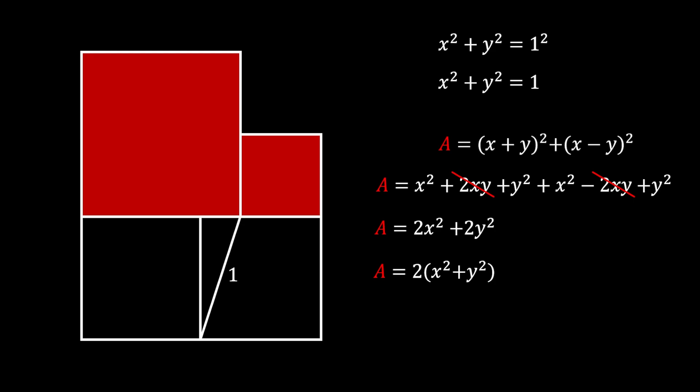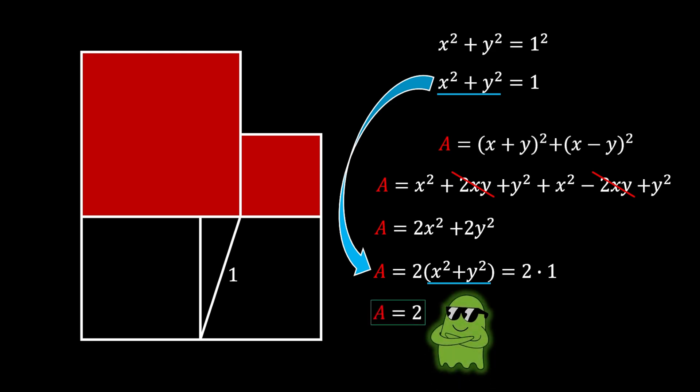But, if you remember, we already got the value of x squared plus y squared that is equal to 1. So, we can substitute that value in, and we will get that our area is equal to 2 times 1, which means that the combined area of our two different sized squares must be equal to 2 square units, and this is our solution.